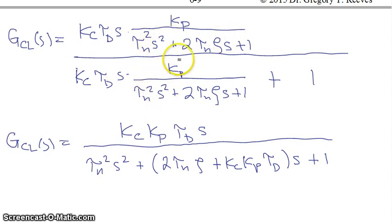what you get is you still have this 2 tau n zeta times s term here, but then you also have this kc times kp times tau d s term in the denominator as well. And so those two get added together as the coefficient that's multiplying s.